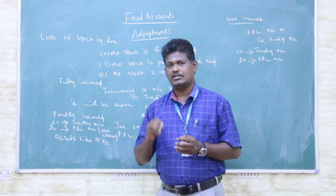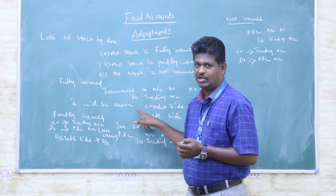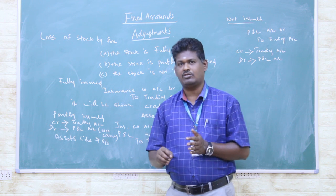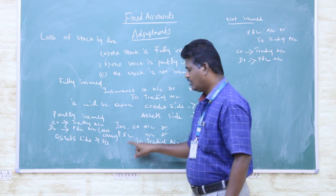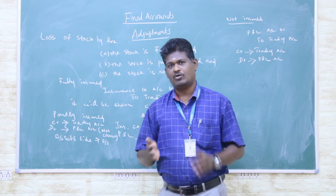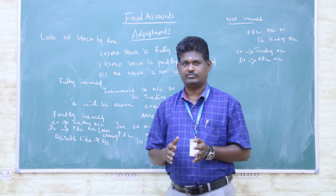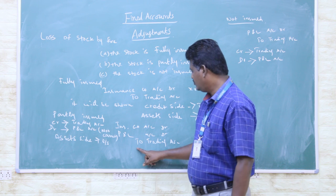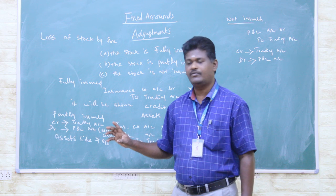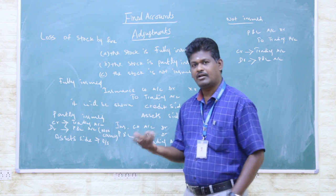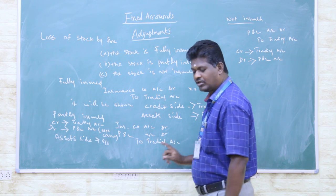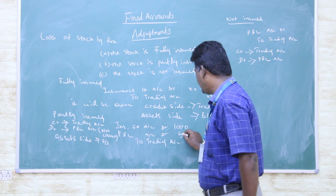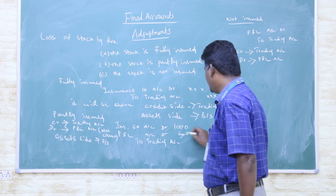The amount that is covered by insurance is debited to the insurance company account and credited to the trading account. The uncovered loss amount is debited to the profit and loss account and credited to the trading account. So for the total loss of 1500 rupees: 1000 rupees is covered by the insurance company, and the remaining 500 rupees is not covered and is written off to profit and loss.